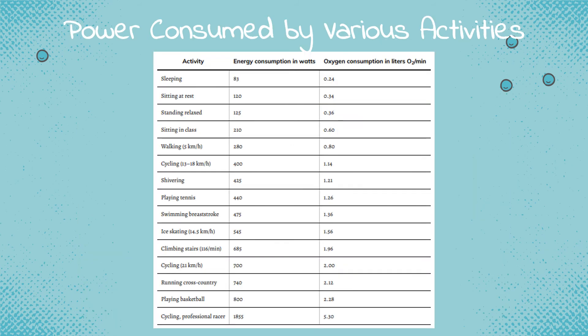This table shows the power consumed by various vital organs during rest, including oxygen consumption in mL/min and percentage of the basal metabolic rate. You don't need to memorize these values, but it's interesting to see how power is distributed across the body at rest. Another table shows power consumed by various activities, ranging from sleeping at the lowest end up to professional cycling at 1855 watts.